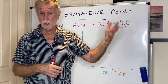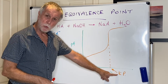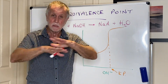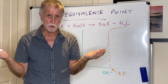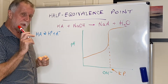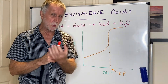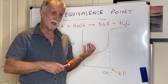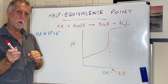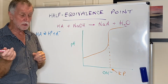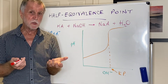We looked at titration curves and the equivalence point — where the acid and the alkali cancel each other out completely. Now we're going to look at the half equivalence point, which can appear in exam questions. This applies to a weak acid versus a strong base; the concept is the same for weak base versus strong acid.